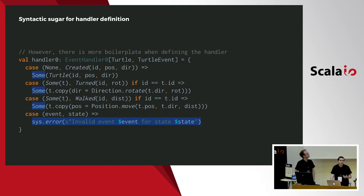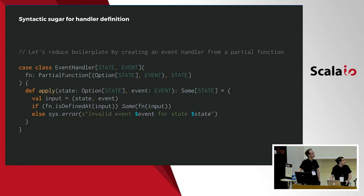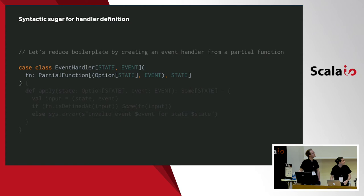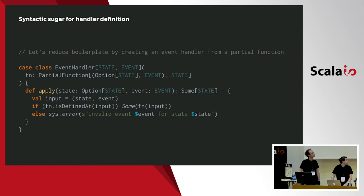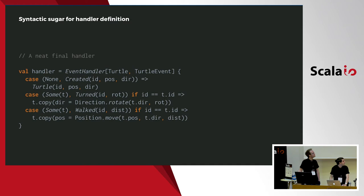We have to wrap everything in Some and deal with errors ourselves. We can easily create a factory for this event handler which receives a partial function and returns a state — not a Some of state. It will check if the transition is valid: if valid, wrap in Some; if not, return the error. The new definition is much simpler and easier to read, and we won't change it from here because it's good for what we want to do.